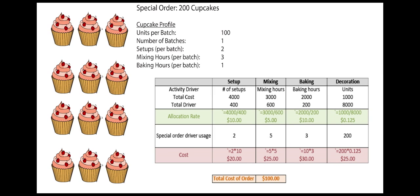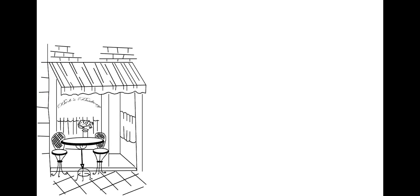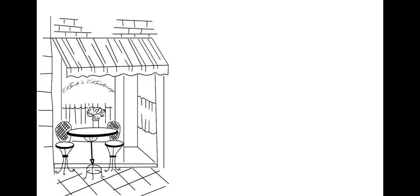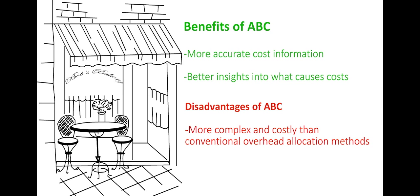As overhead allocations better reflect the actual activities and resources consumed in the production process, ABC provides more accurate cost information that should improve decision-making such as determining product mix and pricing. It also provides better insights into where resources are being consumed in the firm and what drives these costs, resulting in better cost management.